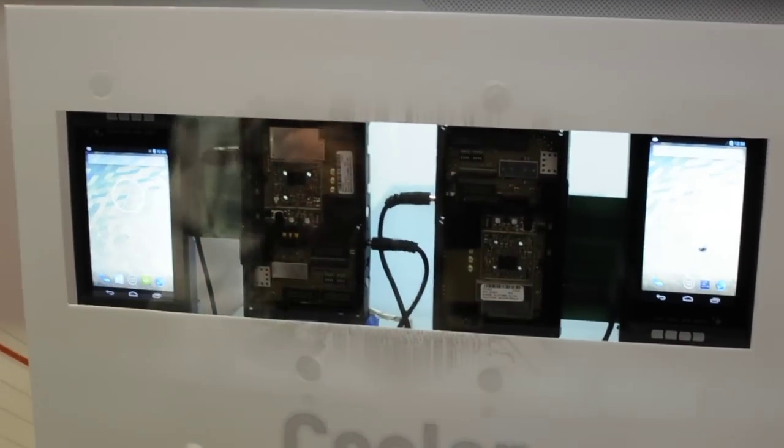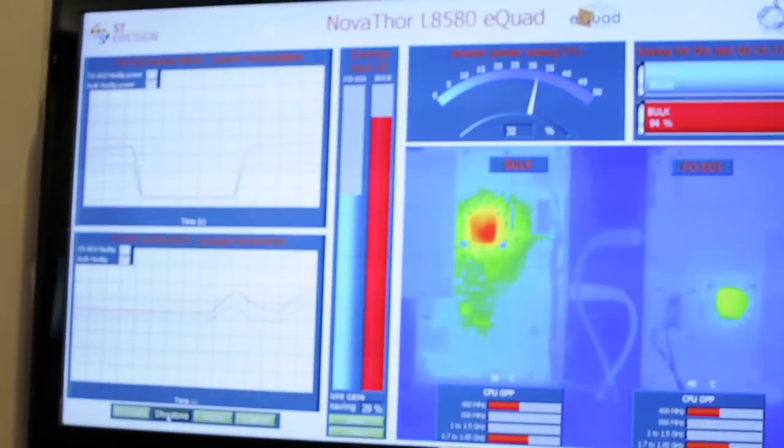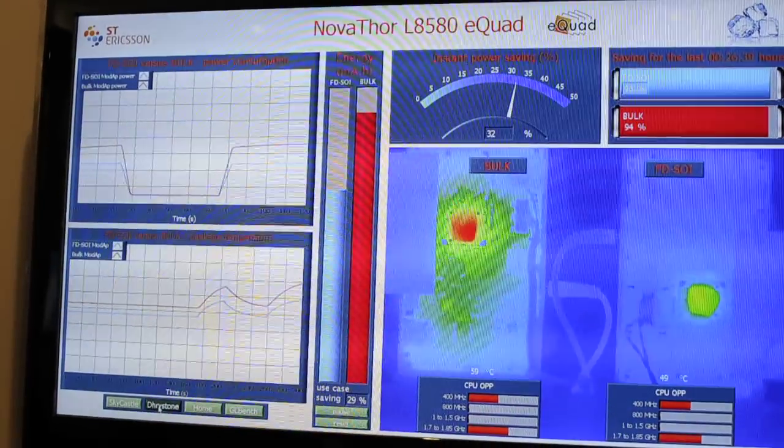And here we are showing that... So what is the CPU configuration? So the CPU configuration is a dual A9, but we can operate in two different modes.